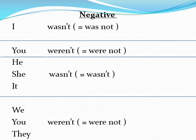The next one is negative. Negative means al-nafi. Just add 'not' after 'was' or 'were'. For example: I wasn't, he wasn't, we weren't.